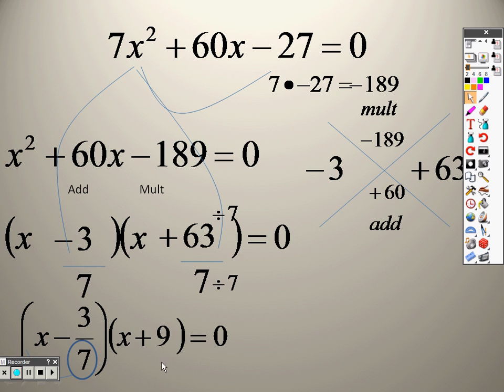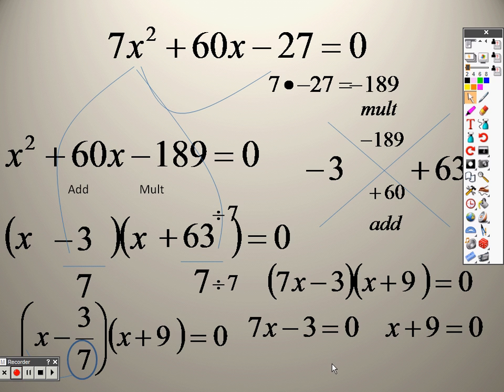I can't have 7 on the bottom, so I move that up, so I get 7x minus 3 and x plus 9. So I separate each of those to equal 0.